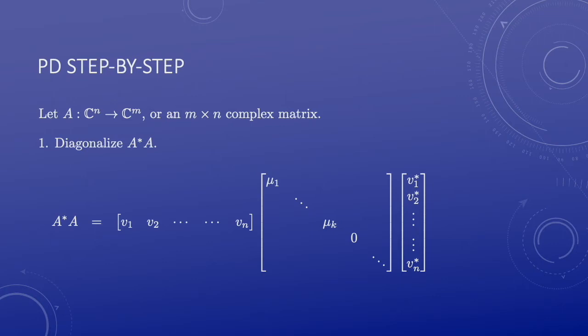The first step is to diagonalize A star A using the spectral theorem. The diagonal matrix contains all the eigenvalues of A star A. The eigenvalues may be written in descending order. Assume the first k eigenvalues are non-zero, and the remaining n minus k eigenvalues are zero. This means that in general, A star A is not necessarily invertible.